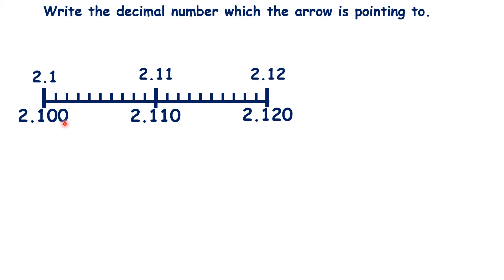So when you do that, it's really easy to see that this is 2.103, this is 2.109, this is 2.113, and this is 2.119.